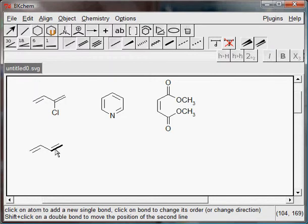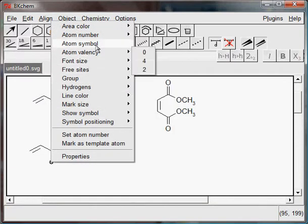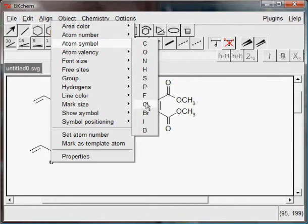There is a chlorine atom on a second carbon. Make additional bond from a second carbon. Press right mouse button on the end of it. Select atom symbol. Chlorine.